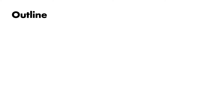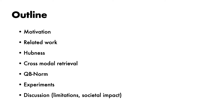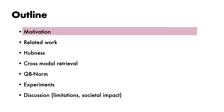This is an outline for what we will discuss. We will start with the motivation for this work, then talk about related work. Next, we will describe the hubness phenomenon and offer a brief summary of how cross-modal retrieval works. We will then describe QB norm and the range of experiments used to assess whether it is effective in mitigating hubness, and conclude with a brief discussion of limitations and societal impact. With the plan in place, let us leap into the motivation.